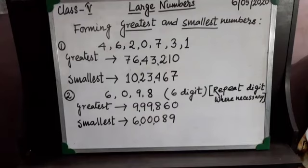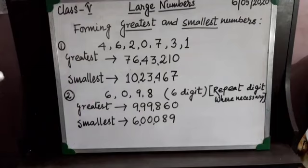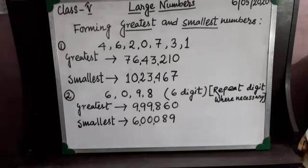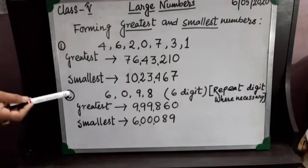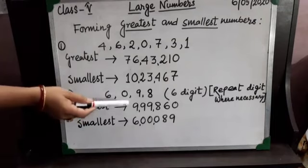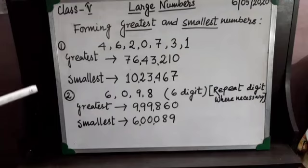Here is one more example. I have given you only 4 digits: 6, 0, 9, and 8, but you are asked to make a 6-digit greatest number and a 6-digit smallest number. In the bracket you can see it says 'repeat digit where necessary.' So while making the greatest number, we repeat the greatest digit, which is 9, three times, then arrange in descending order: three 9s, then 8, then 6, then 0. The 6-digit greatest number is 9,99,860.